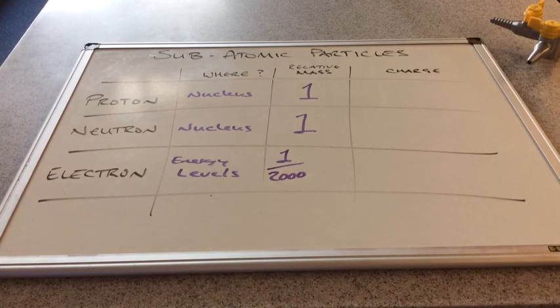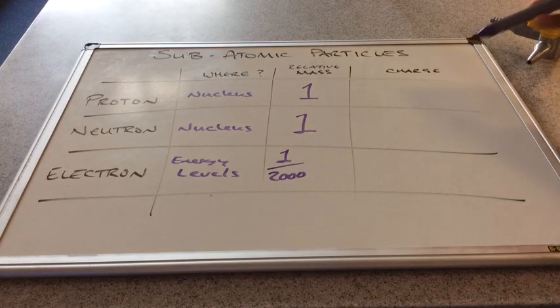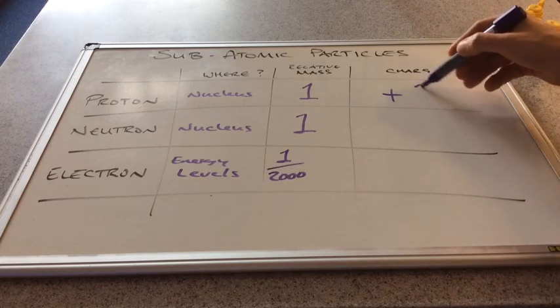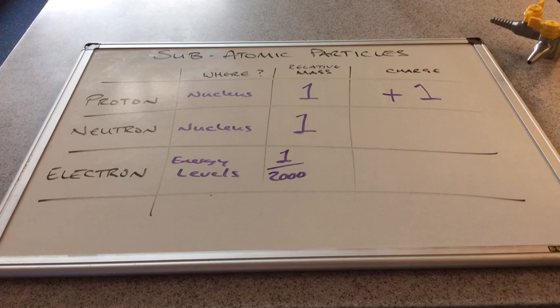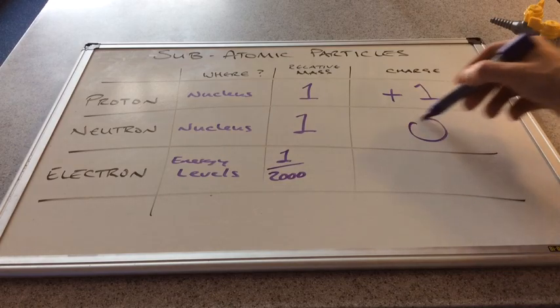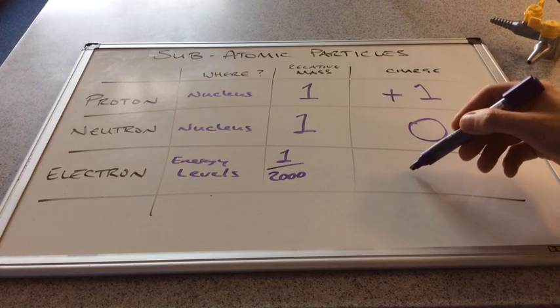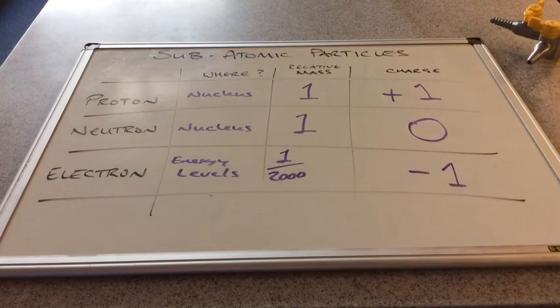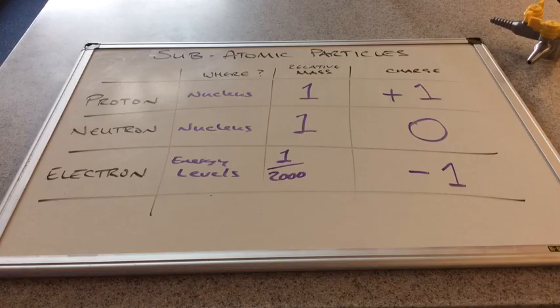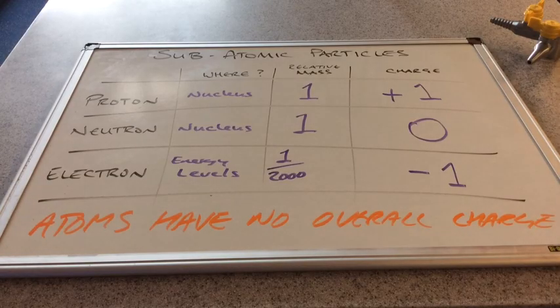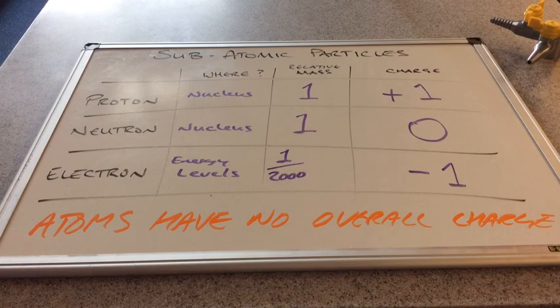Now we'll look at the charges of these three subatomic particles. The charge of a proton is plus 1. Neutron is neutral, no charge, so 0. Electrons have the opposite charge to a proton, so they are minus 1. Why do you think atoms have to have the same number of protons and electrons? You can see I've written the answer at the bottom. Atoms must have no overall charge.